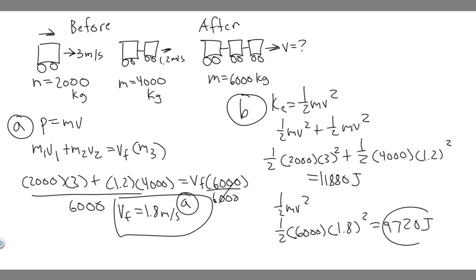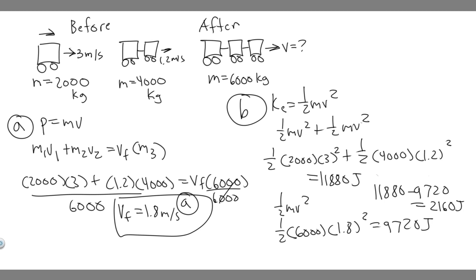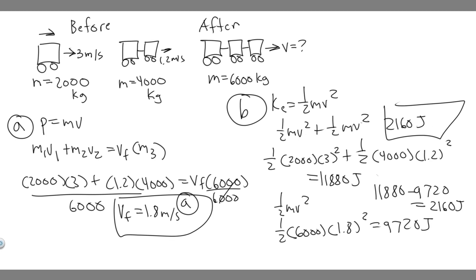So this is the initial kinetic energy and this is the final. To find how much is lost, we just subtract: 11,880 minus 9,720. When you do this, you get 2,160 joules. So 2,160 joules is how much kinetic energy is lost in the collision — that's the answer to Part B. And hopefully you found this useful.